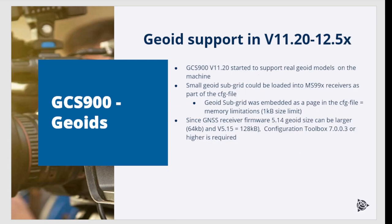In version 1120, GCS 900 started to support real GeoEat models on the machine, however with some major limitations. GeoEat models resided inside the receivers, and only small GeoEat subgrids were supported. This was because the GeoEat subgrid was embedded as a page in the configuration file, and this caused a serious memory limitation.